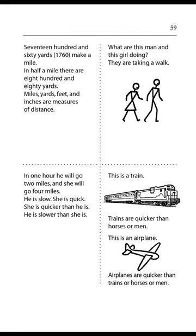Page 59. Seventeen hundred and sixty yards make a mile. In half a mile, there are eight hundred and eighty yards. Miles, yards, feet, and inches are measures of distance. What are this man and this girl doing? They are taking a walk. In one hour, he will go two miles and she will go four miles. He is slow, she is quick. She is quicker than he is. He is slower than she is. Trains are quicker than horses or men.